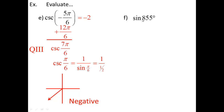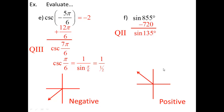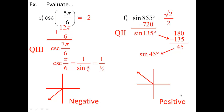Sine of 855°. Instead of subtracting 360° twice, let's subtract 720° at once, leaving 135°. 135° is in the second quadrant, and sine is positive in Q2. The reference angle is 180° − 135° = 45°. Both the x and y values at 45° are √2/2, so sine of 45° is √2/2. Since the angle is in Q2 where sine is positive, the answer is positive √2/2.